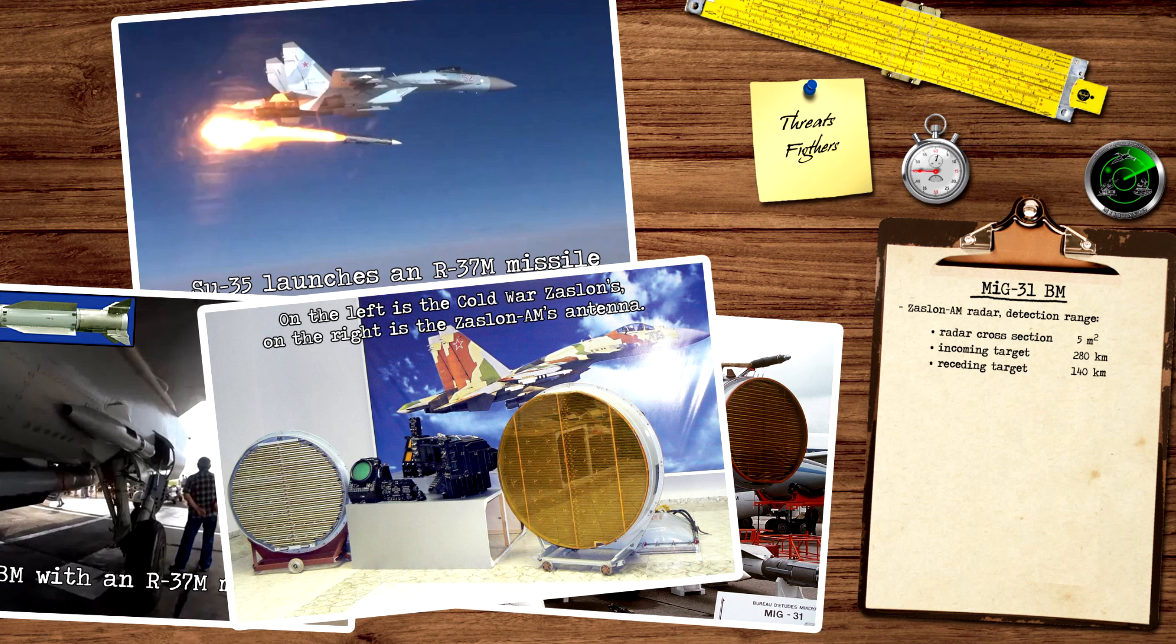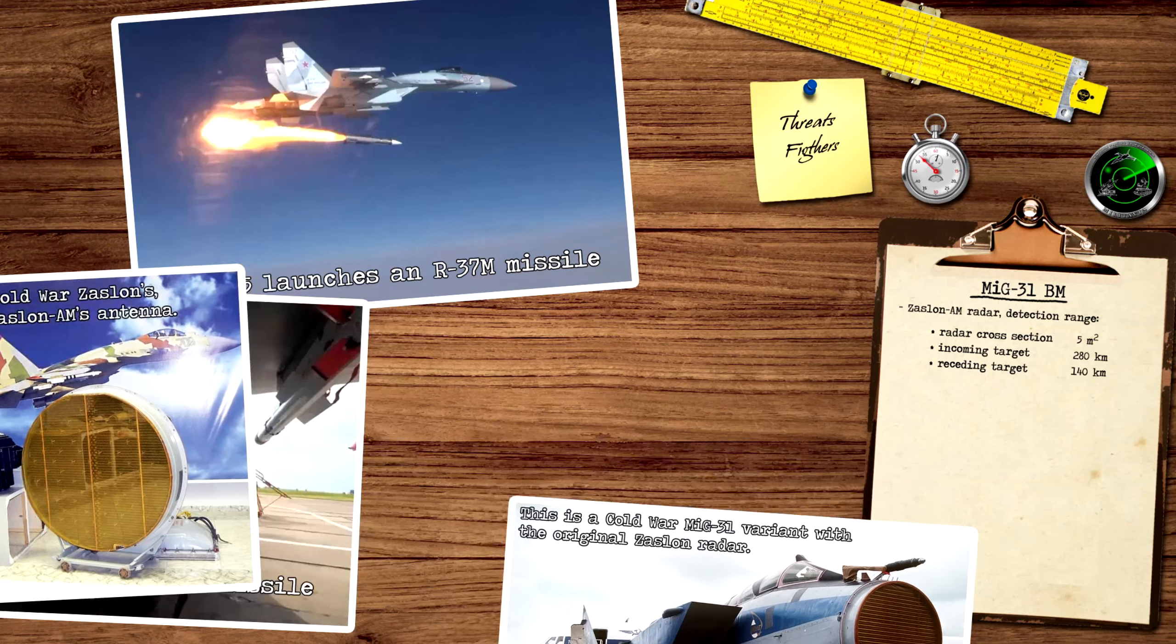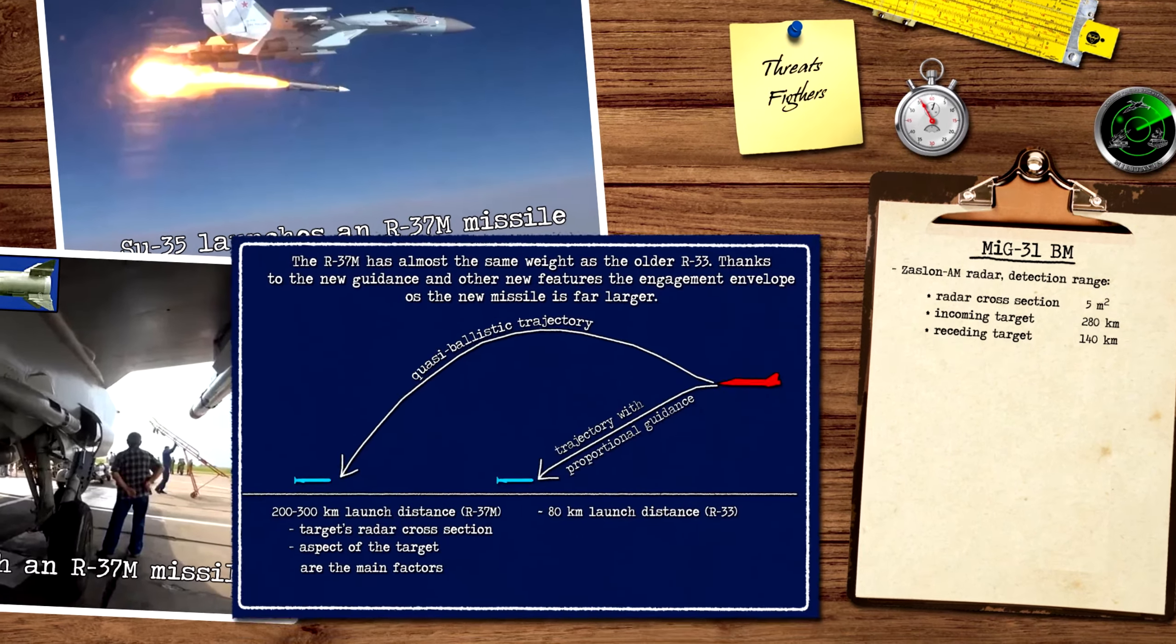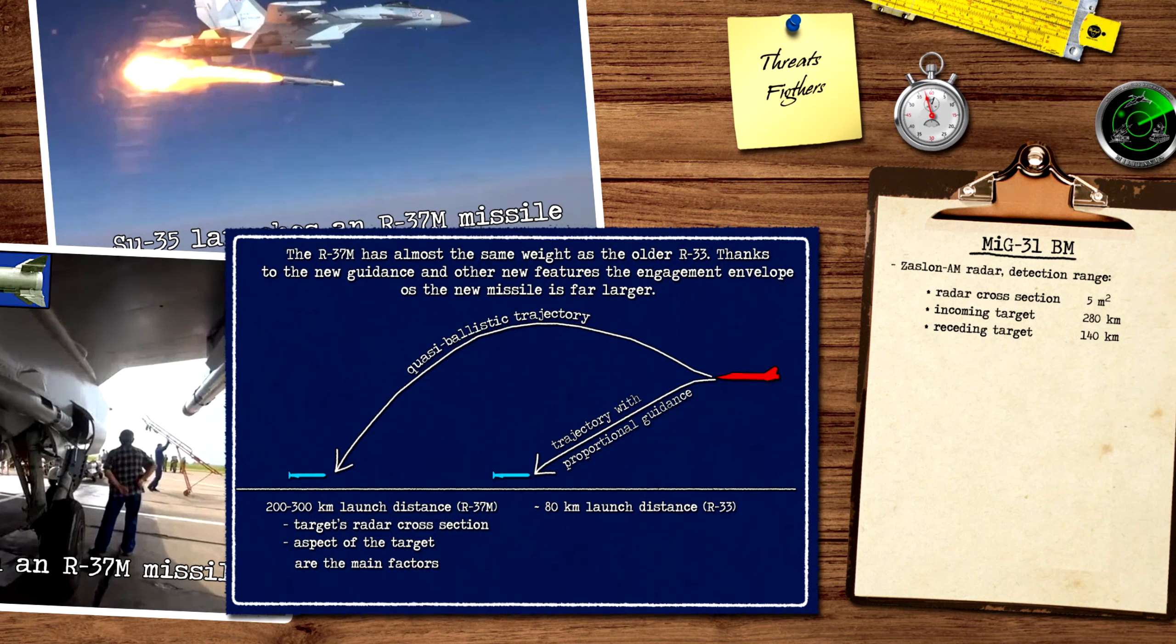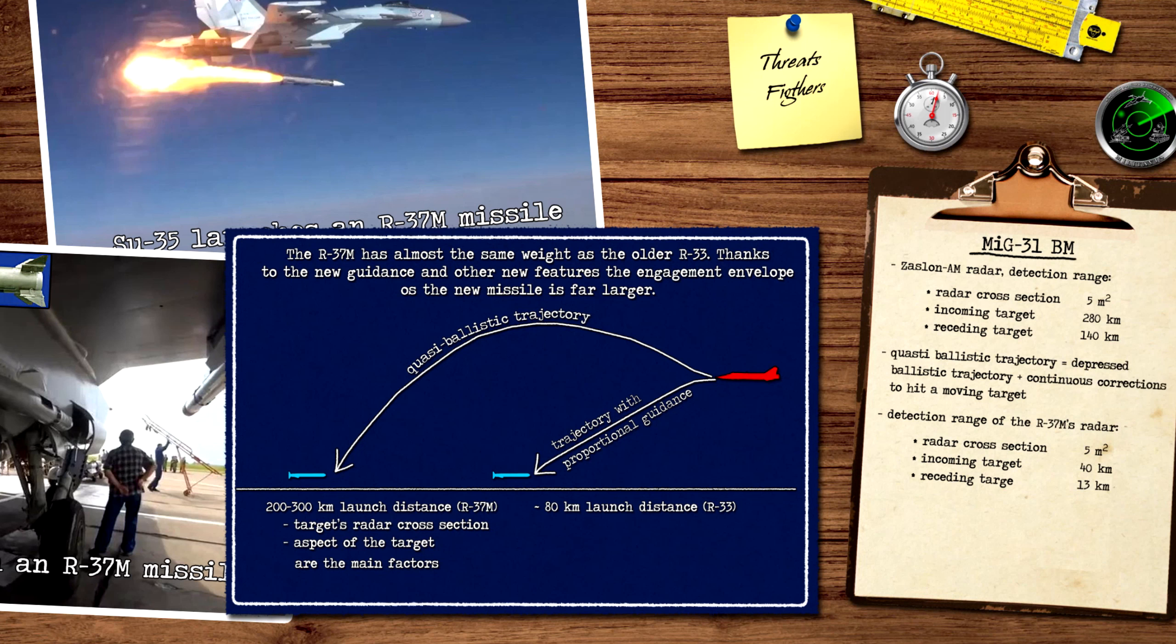The MiG-31 is able to carry 4 R-37M missiles under the fuselage hardpoints, and 2 R-77 missiles under the wing hardpoints. The burnout speed of the R-37M missile is Mach 6. Despite being similar in weight and size to the older R-33 missile, the missile's kinematic range increased dramatically. While the predecessor R-33 used proportional guidance during almost its entire trajectory, in contrary, the R-37M approaches the target on a quasi-ballistic trajectory, thanks to the advancements in digital technology.